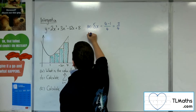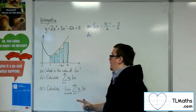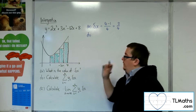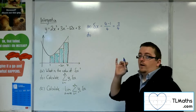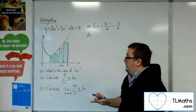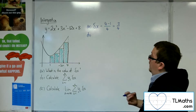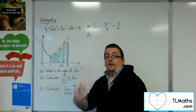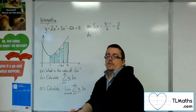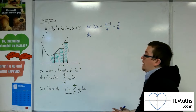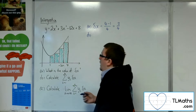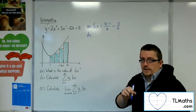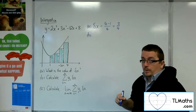Part b asks us to calculate the sum of yi times delta x. The yis are the heights of the bars, and we can multiply that by delta x. So effectively what we're being asked is to find the total area of the green bars. We're going to need the y values for each of the heights of the bars.